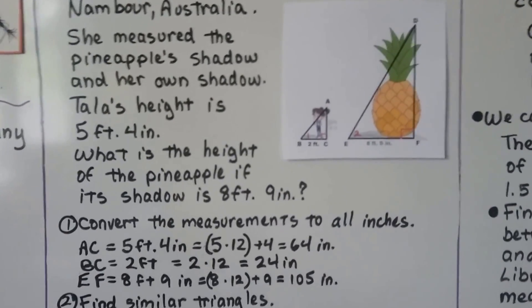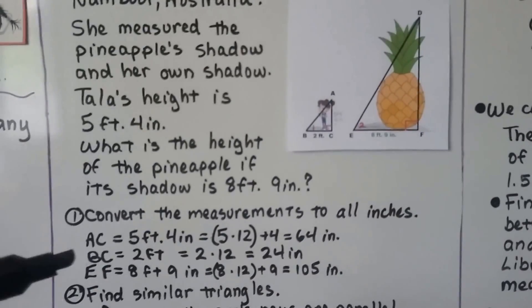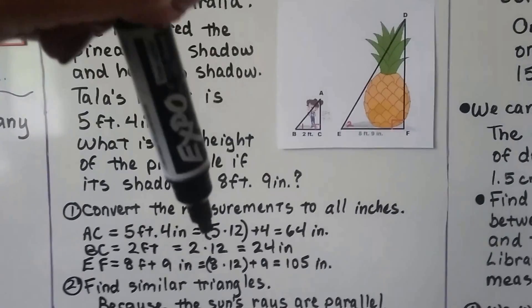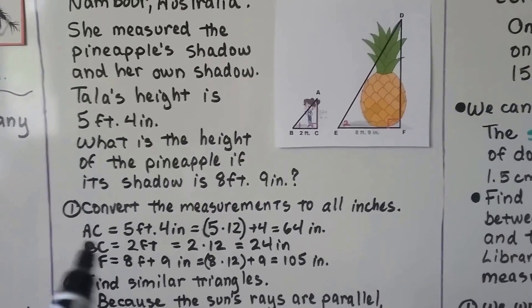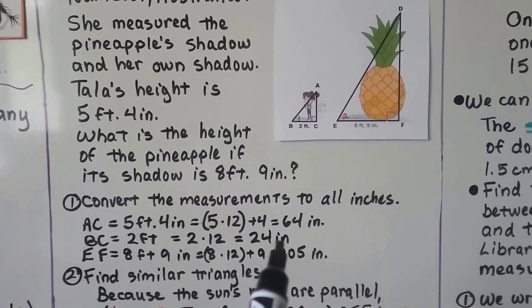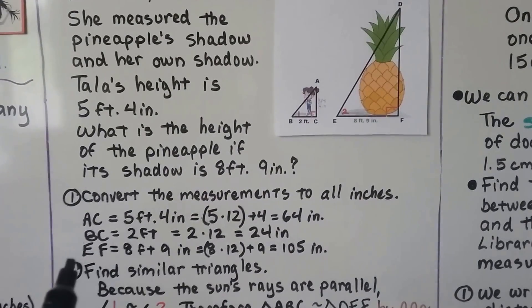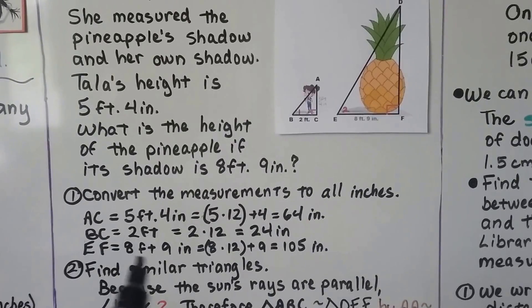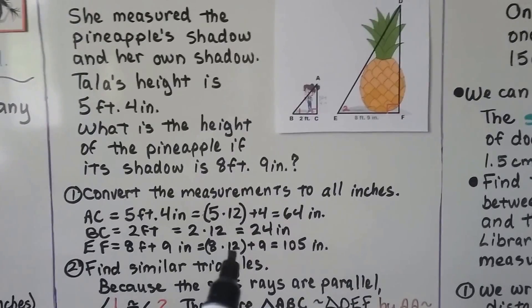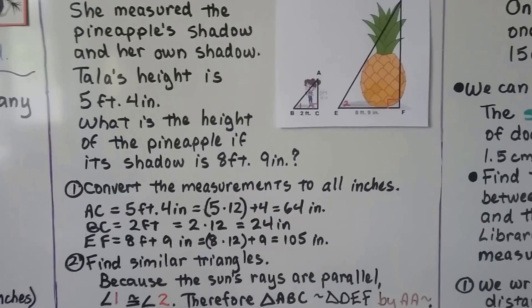We convert the measurements to all inches. Her height is 5 feet 4 inches, that's 5 times 12 inches in the foot plus the 4 extra, that's 64 inches. And her shadow BC is 24 inches. And EF, this shadow is 8 feet 9 inches, which is 8 times 12 plus the extra 9 is equal to 105 inches.